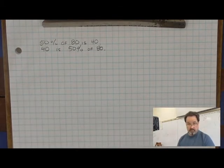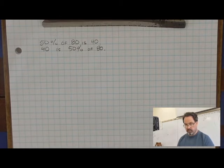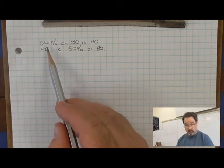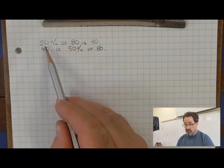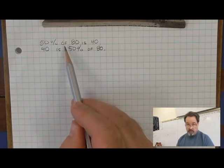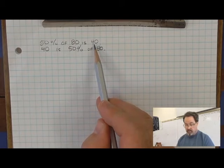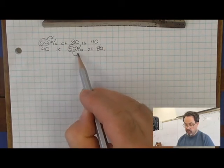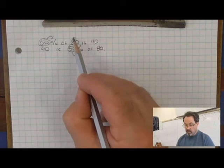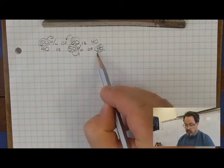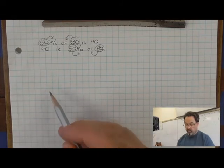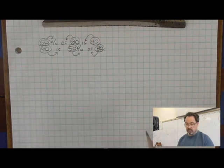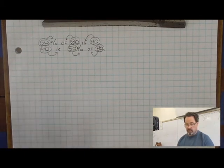These two statements are communicating the same thing, but the order of the language and the numbers is a little bit different. Here's what's similar between these two statements, other than the math. Each has three quantities, and one of those quantities is a percent. One is what I call the of quantity, and one is what I call the is quantity. Notice that in both statements, the percent is 50 both times, the of quantity is 80 both times, and the remaining quantity, 40, is called the is quantity both times.